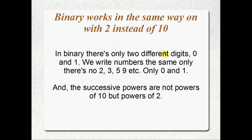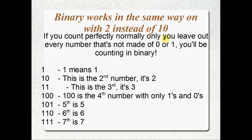In binary there are only two digits: zero and one. We write numbers pretty much the same way, except there are no other digits — you can't use two, three, five, nine, or seven. Four is out of the question as well. But you can use zero and one, which is pretty cool. And the successive powers as you move to the left are not powers of ten — they're powers of two. Binary is just crazy about two.